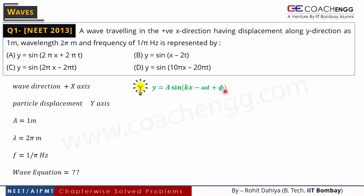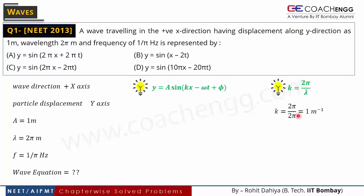Phi is the phase constant at x = 0 and t = 0. The particle's initial position is given by phi. First of all, wave number k is equal to 2π/λ. We substitute the value of lambda from the question — 2π upon 2π.